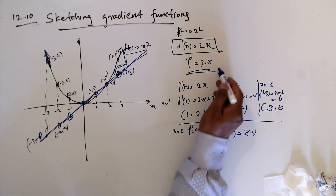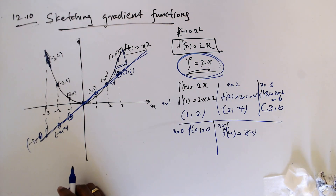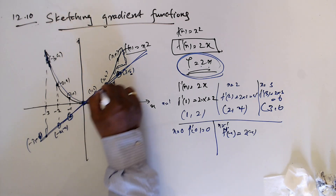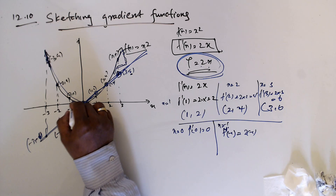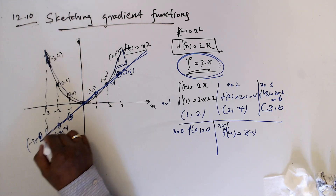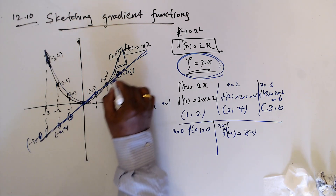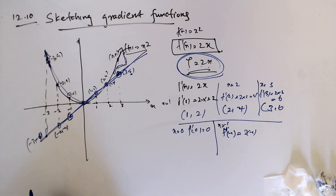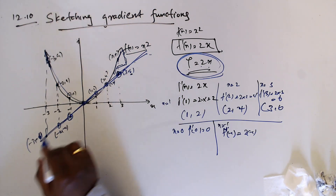When you differentiate, you still get a relationship between y and x — a different function of x. This is the original curve, and this is the gradient function showing how the gradient behaves as you move along the curve. The gradient goes from negative infinity to positive infinity.